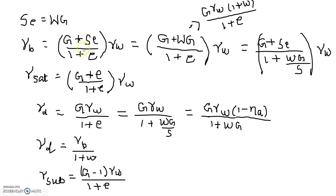This is the bulk density formula: (G + Se) divided by (1 + e), multiplied by gamma W. For saturated density, saturation is equal to 100%, meaning S equals 1, so 1 into e equals e. That is the saturated density formula.